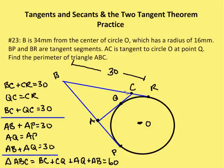So B to C to Q is 30 units, B to A to Q is 30 units. So triangle ABC ends up being 60 units total.